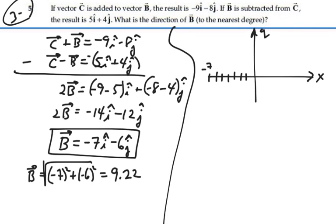and -6j. So right in here would be our vector B like this with those components. You've got -7i and -6j like that.